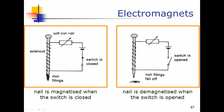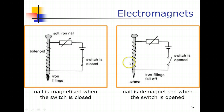By closing the switch, the circuit is completed. Adjusting the variable resistor gives different current levels through the solenoid, allowing us to control the strength of the magnetic field around the soft iron. Once closed, iron filings nearby are attracted to the nail. When the switch is opened, current stops flowing and the soft iron demagnetizes quickly, causing the iron filings to fall off.